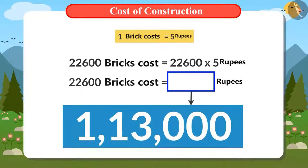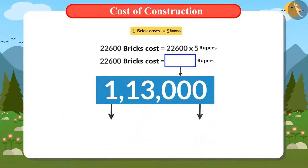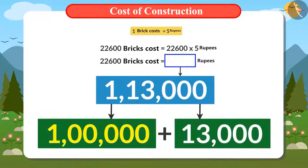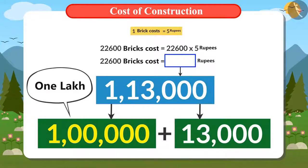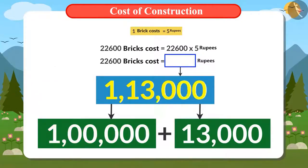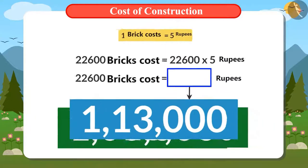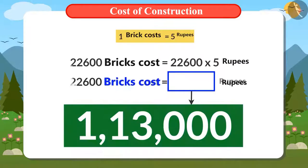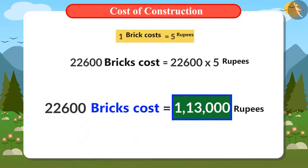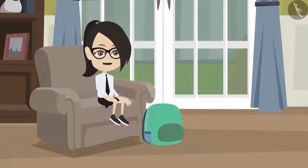Do you know how to read the answer? 100,000 is read as 1 lakh. So 1,13,000 is read as 1 lakh 13,000. This means the total cost of 22,600 bricks will be 1 lakh 13,000 rupees.